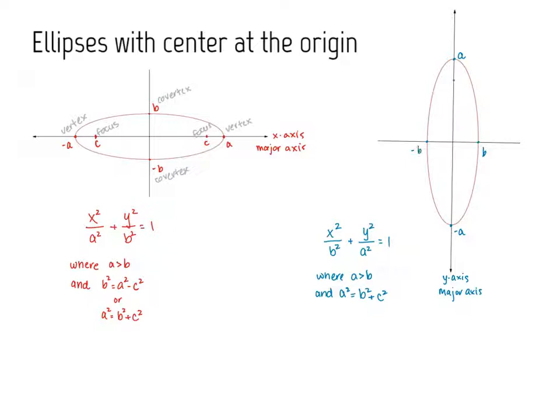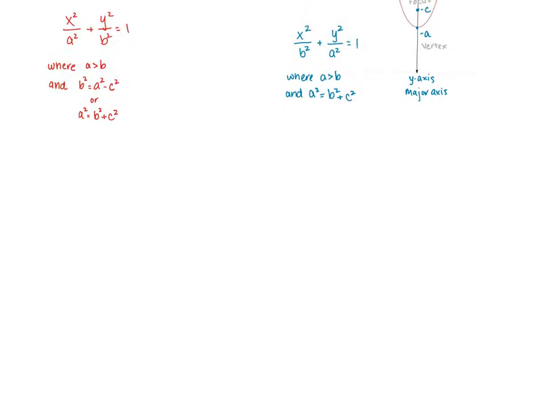So anytime the a value is under the variable x, you have a long ellipse, and when it's under the variable y, you have a tall ellipse.